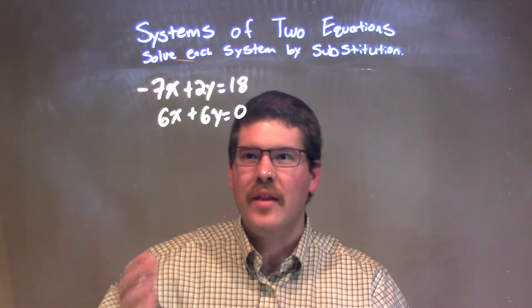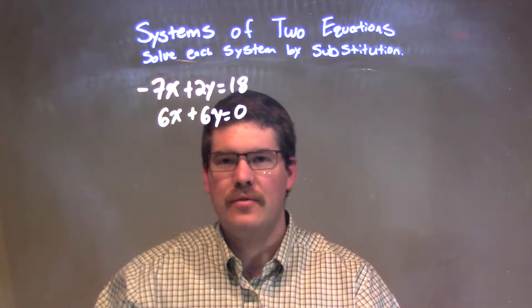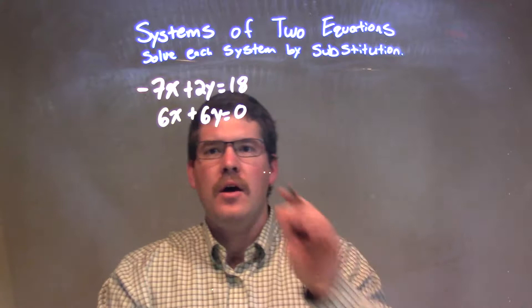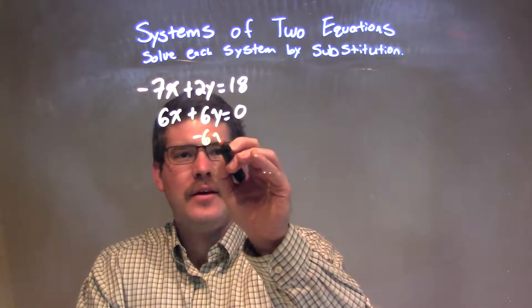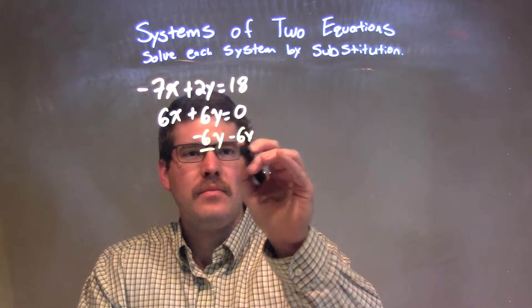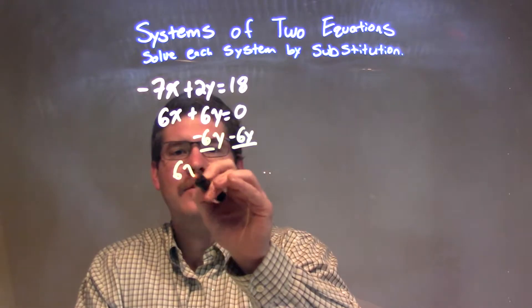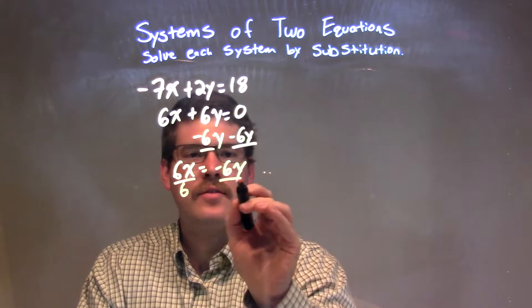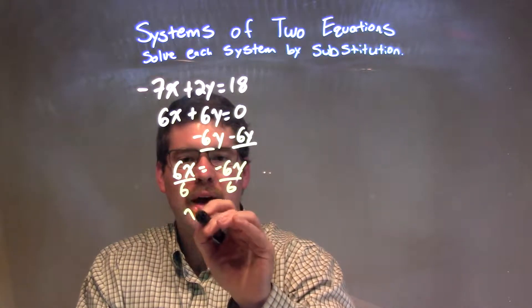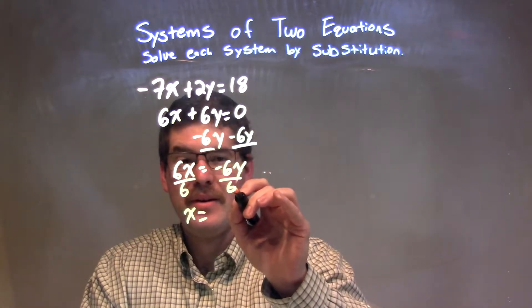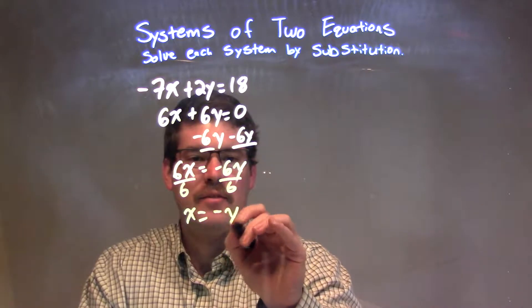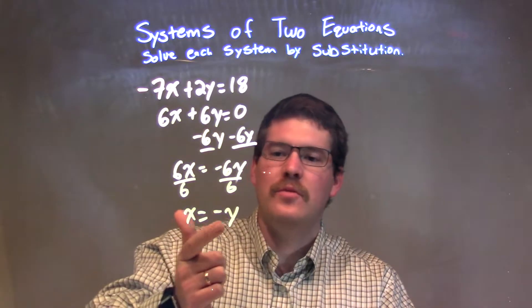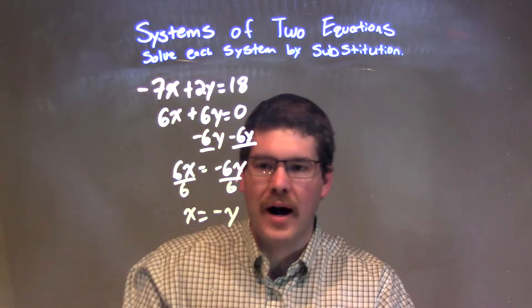What I want to do is get one of these variables isolated by itself, and I find it easier with the second equation. So watch this. I'm going to subtract 6y from both sides. That leaves me with 6x equals negative 6y. Be careful with this. Take your time. Divide by 6 on both sides gives me x by itself, and negative 6 divided by 6 is negative 1, so we have negative y here. This becomes tricky. We know that x is equal to negative y.